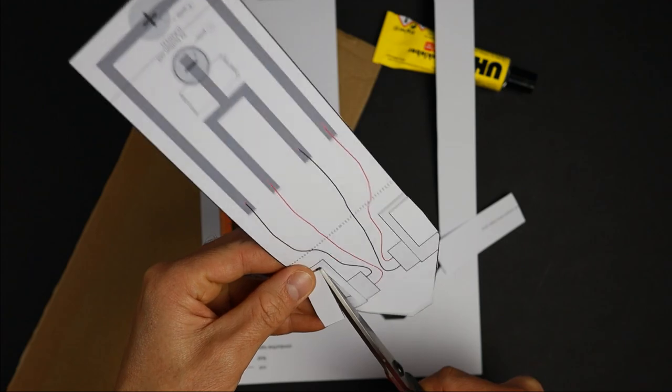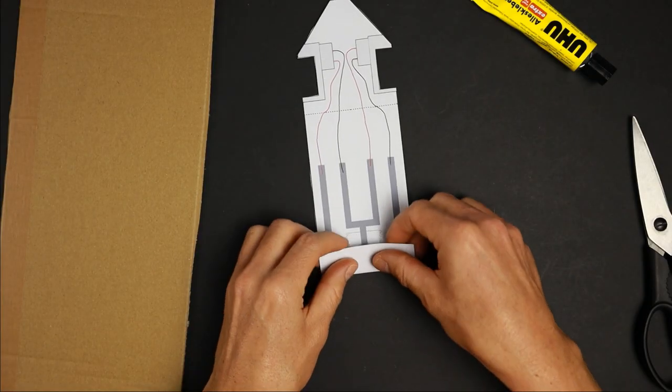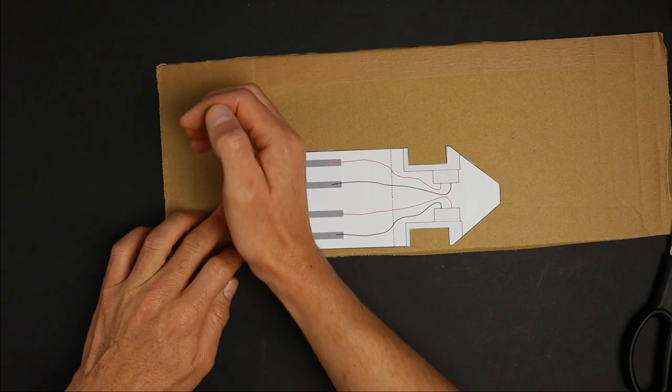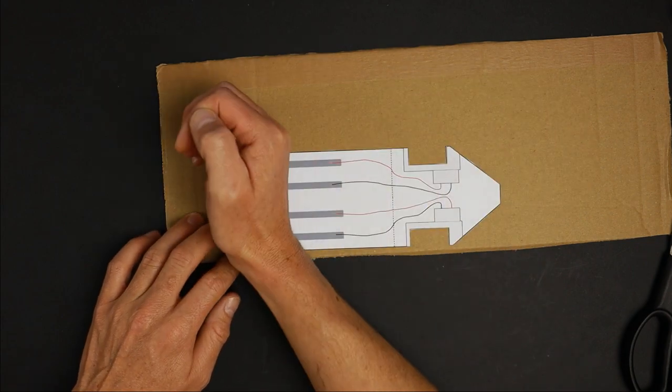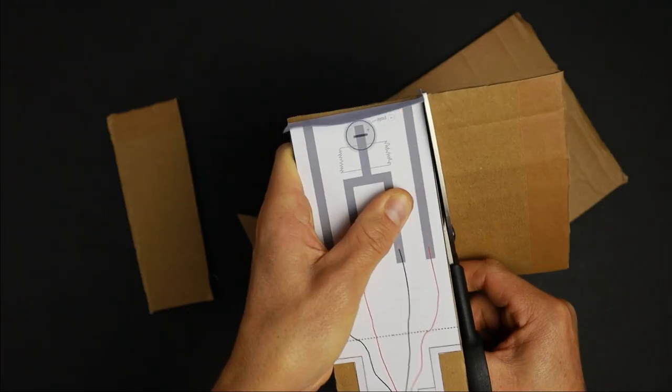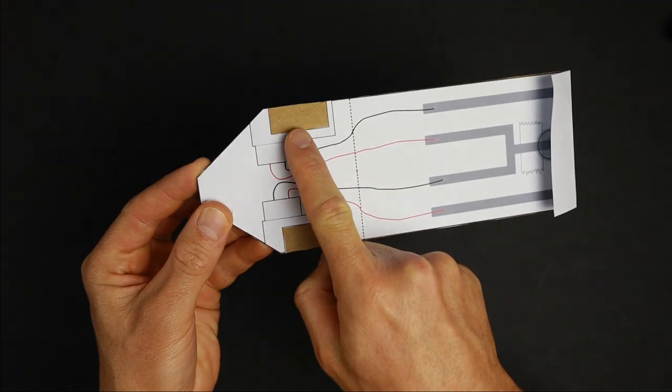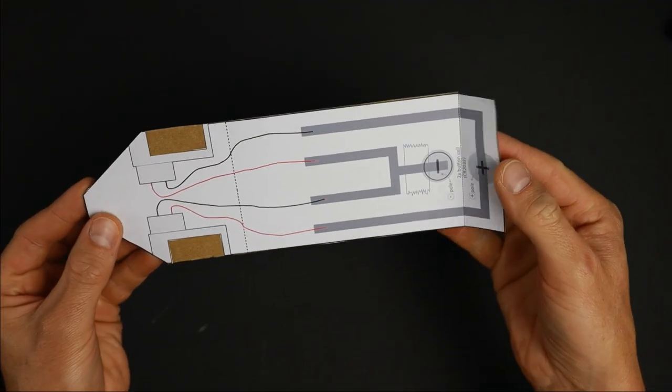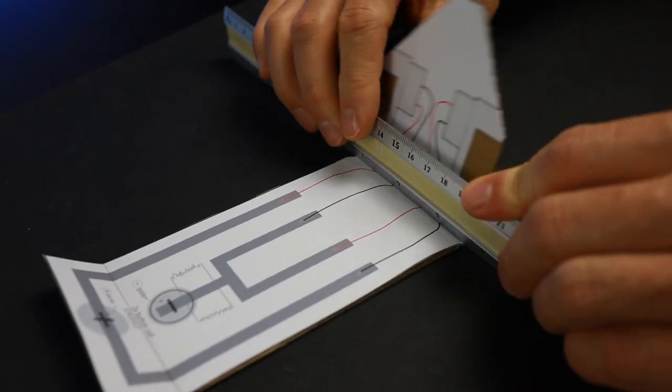To start, cut out the chassis. Then fold over the edge where the batteries will go. Now glue it to thin cardboard and cut out the shape. Leave a gap where the motors will be glued to the cardboard. Fold the cardboard where marked.